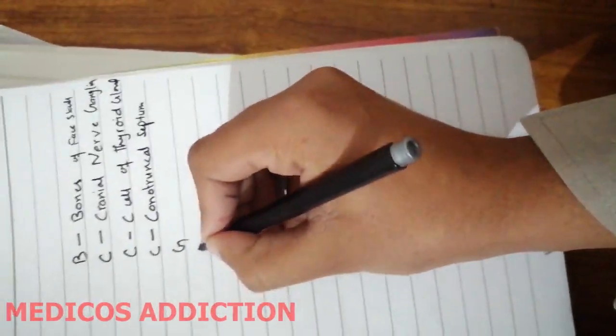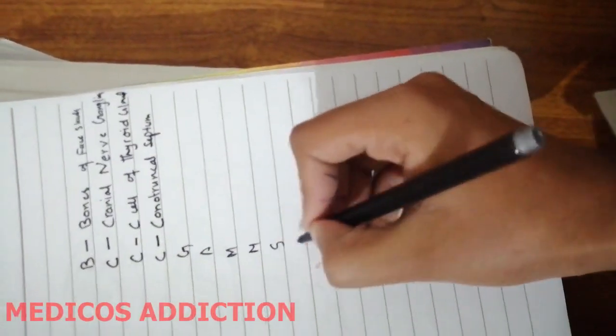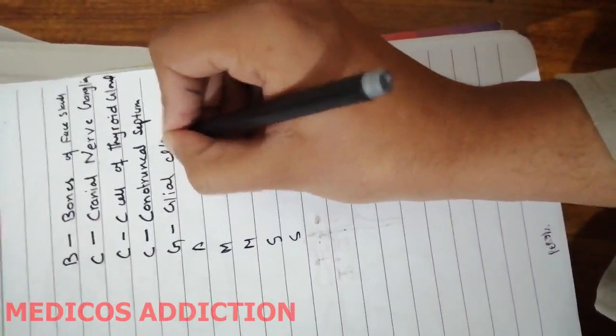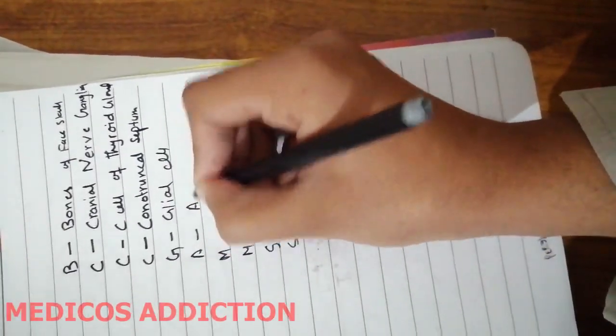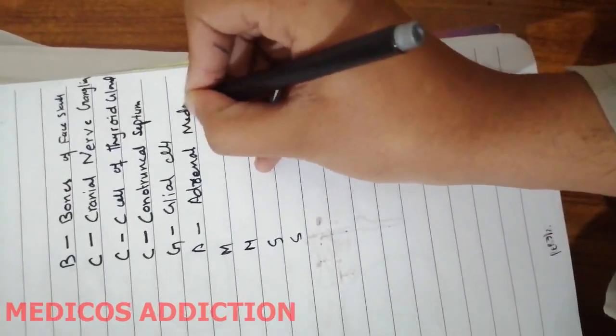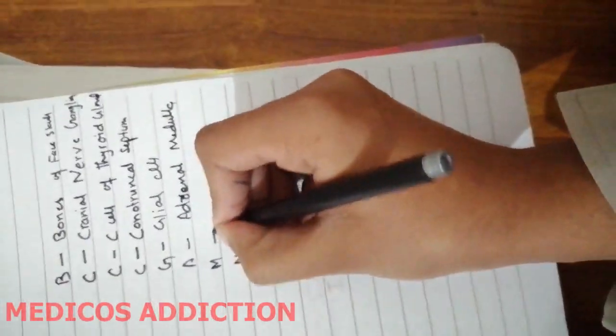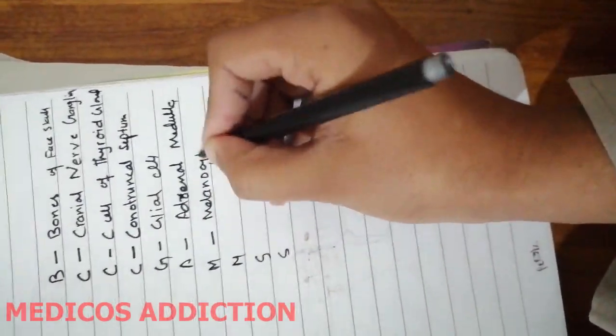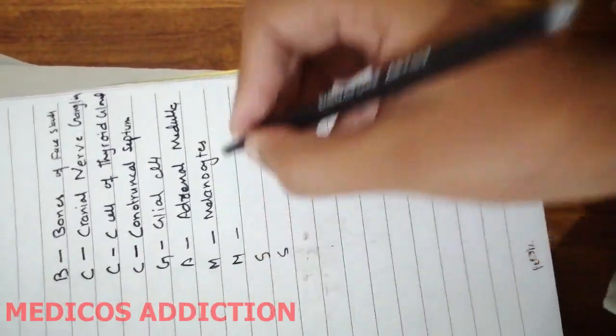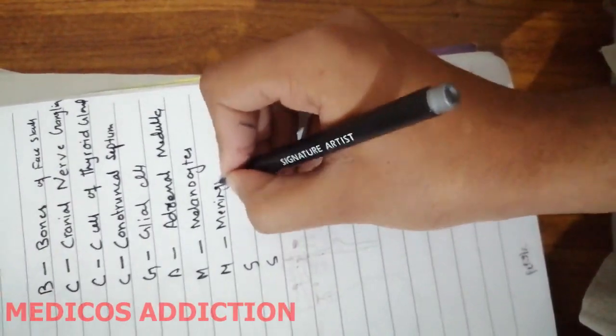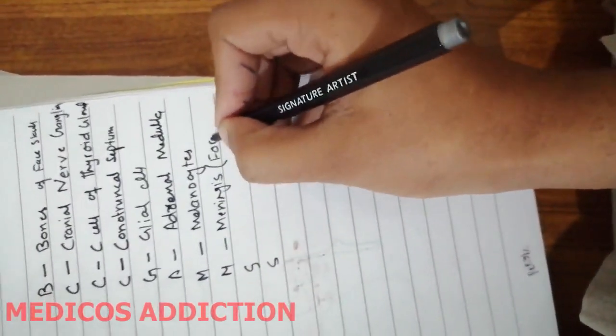Now GAMES: G, A, M two times, and S two times. G for glial cells. A for adrenal medulla. M for melanocytes. And this M for meninges.